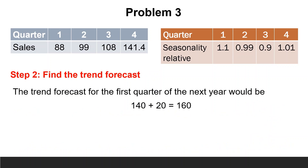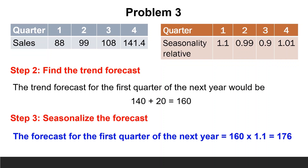The trend forecast for the first quarter of next year would be 140 plus 20, equals 160. To obtain the forecast for this period we have to multiply the trend forecast by the seasonality relative. So the forecast for the first quarter of next year equals 160 multiplied by 1.1, equals 176.